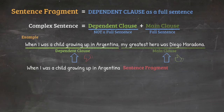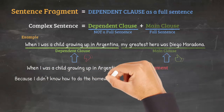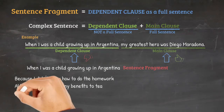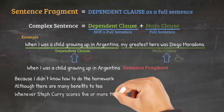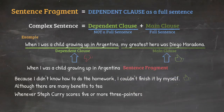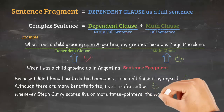The same problem applies to the following sentences: 'Because I didn't know how to do the homework,' or 'although there are many benefits to tea,' or 'whenever Steph Curry scores five or more three-pointers.' None of these sentences are correct. We will need to continue writing all three of them. For example: 'Because I didn't know how to do my homework, I couldn't finish it by myself.' Or 'although there are many benefits to tea, I still prefer coffee.' Or 'whenever Steph Curry scores five or more three-pointers, the Warriors win.'